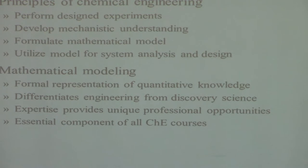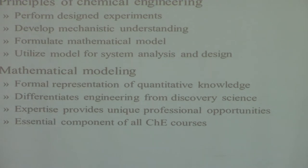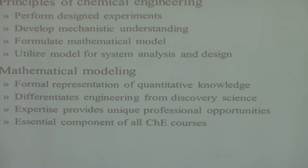In a grandiose way, I boil down chemical engineering to four bullet points. We want to understand the systems we work with — mainly processes, but also materials, macromolecules, polymers, and biotechnology. The first thing we want to do is perform designed experiments, because experiments tend to be costly, time consuming, and take a lot of manpower. I've done a lot of consulting with chemical companies, so if you're going to go into an operating plant making a product, you have to think carefully about how you're going to do an experiment.